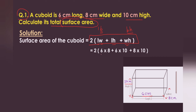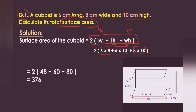So length is 6 cm times breadth 8 cm, and length 6 cm times height 10 cm. We just multiply: 6 times 8 is 48, 6 times 10 is 60, and 8 times 10 is 80. We add them: 48 + 60 + 80 = 188, times 2 gives 376 cm².